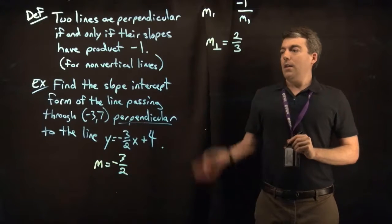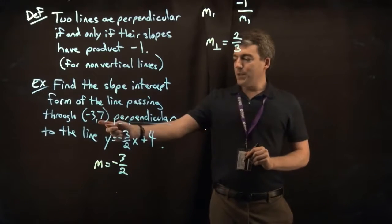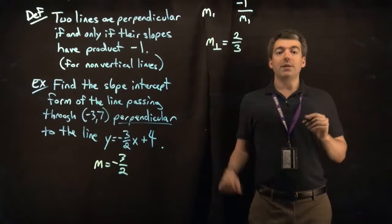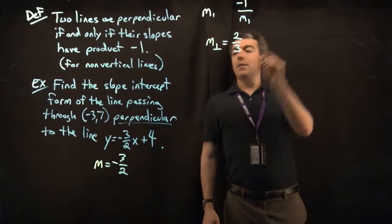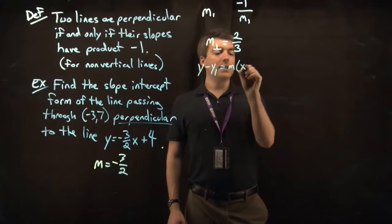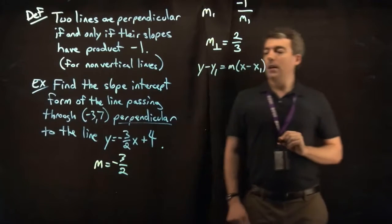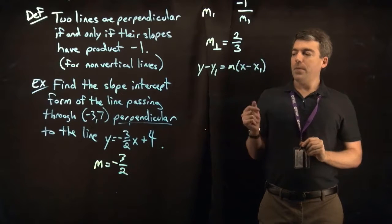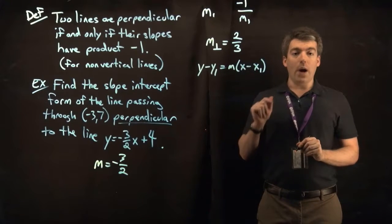All right, now we have a slope. We want it to go through this point. So again, we use the point slope formula, and I'll write it down. So we have y minus y1 equals m times x minus x1. Here we have the slope, and then the point x1, y1.